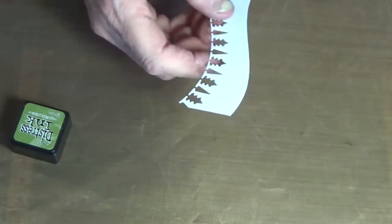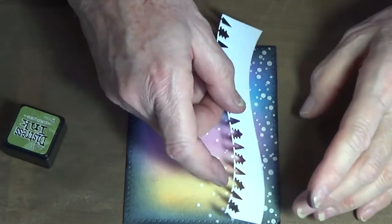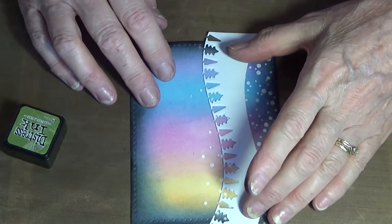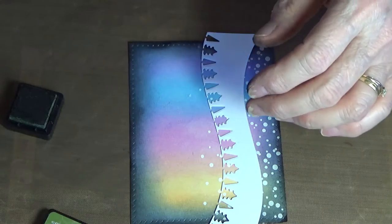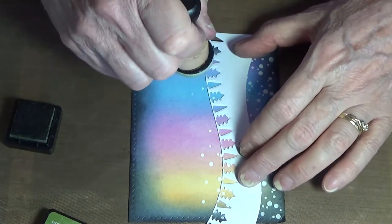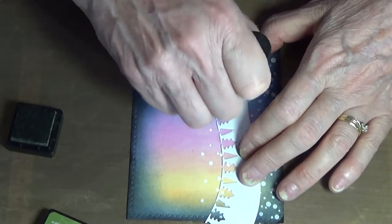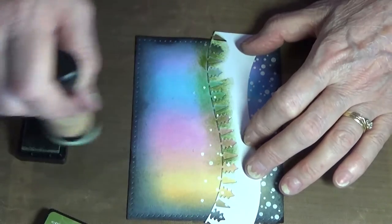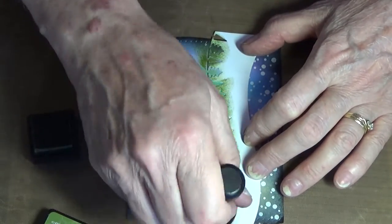Now I'm using the Lawn Fawn Forest Border. I'm actually using the negative space just to create some depth, I guess you could say, into the little scene that I'm developing here.